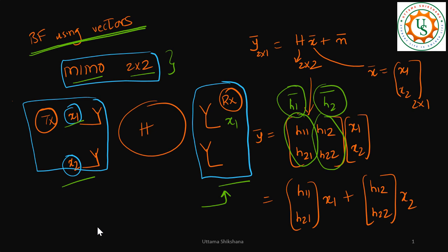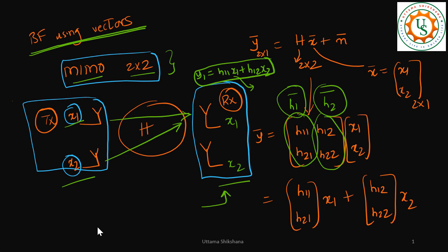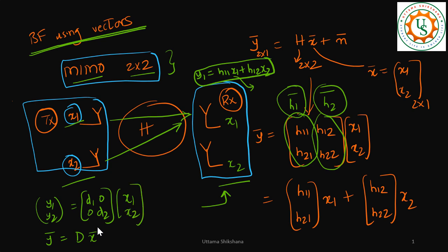On antenna number two I should get only x2. But while transmitting there are cross terms, so the received signal y1 will have a component of x1 plus a component of x2. I should ensure I get back only x1. The desired result after processing is that y1, y2 — written as y_bar — should give a diagonal matrix times x_bar, like d1, 0, 0, d2. This means x1 and x2 are separated out across the antennas and we are able to recover the signal back.